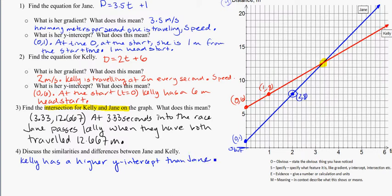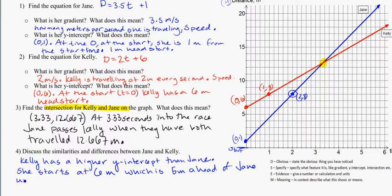Kelly has a higher y-intercept than Jane. That's stating my obvious, and I'm specifying it all in one statement there. She starts at 6 meters, which is 5 meters ahead of Jane, who starts on the 1 meter line.